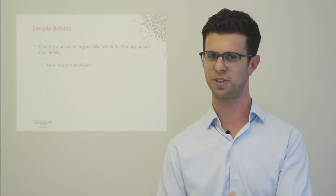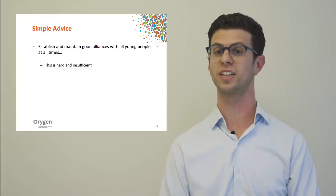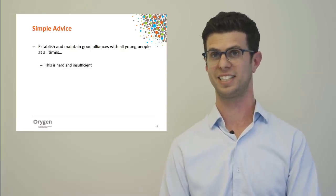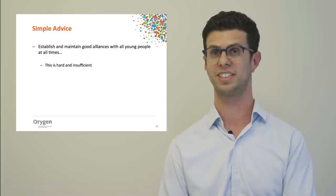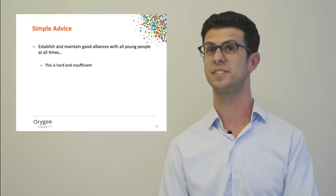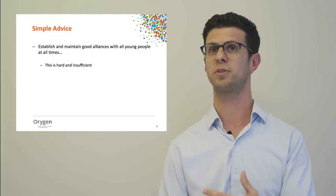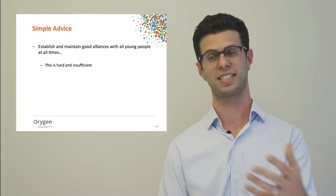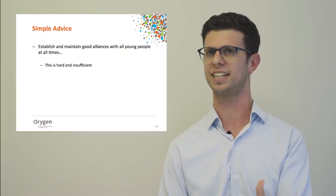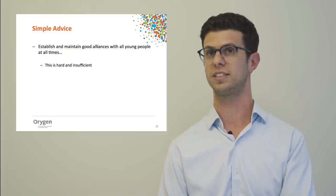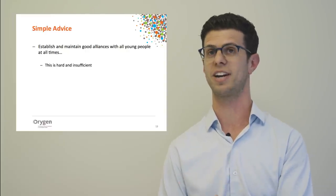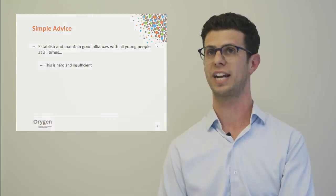So what does this mean for you? It means you should establish and maintain a good alliance with all young people. But is that advice sufficient? It's hard because young people come with complexities in their lives, personality, or psychopathology that make establishing and maintaining an alliance difficult. And it's insufficient — if the alliance breaks down and you're no longer collaborating well, what do you do? We're going to explore that today.